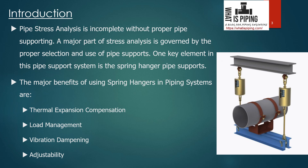For vibration dampening — in many industrial settings pipelines may experience vibrations from nearby machinery or processes. Spring hanger pipe supports help dampen these vibrations, reducing the risk of fatigue and potential damage to the pipeline. For adjustability, spring hangers are adjustable, allowing precise control over the pipe's elevation. This adjustability is vital during installation and maintenance as it ensures the pipeline is correctly aligned and supported. Here you can see an example of G-type support using two variable spring hangers.